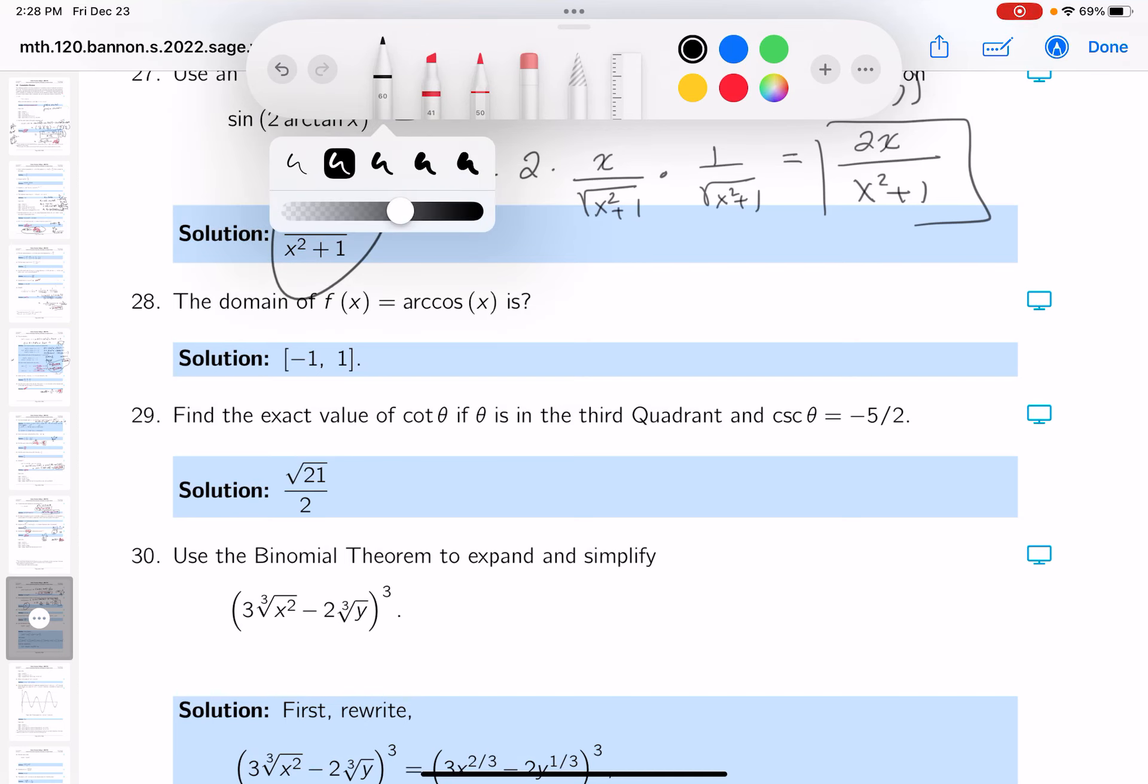For some students, it's a memorization skill. Other students are thinking through it. I want to point out, we're just thinking about the invertible region for the cosine curve.